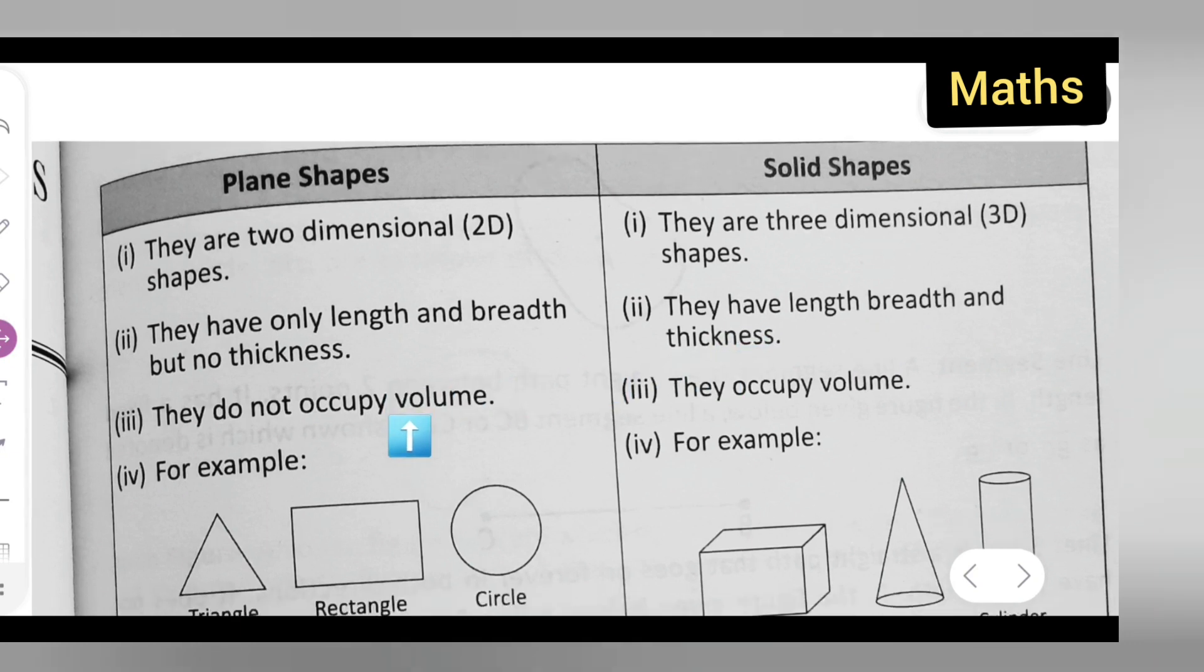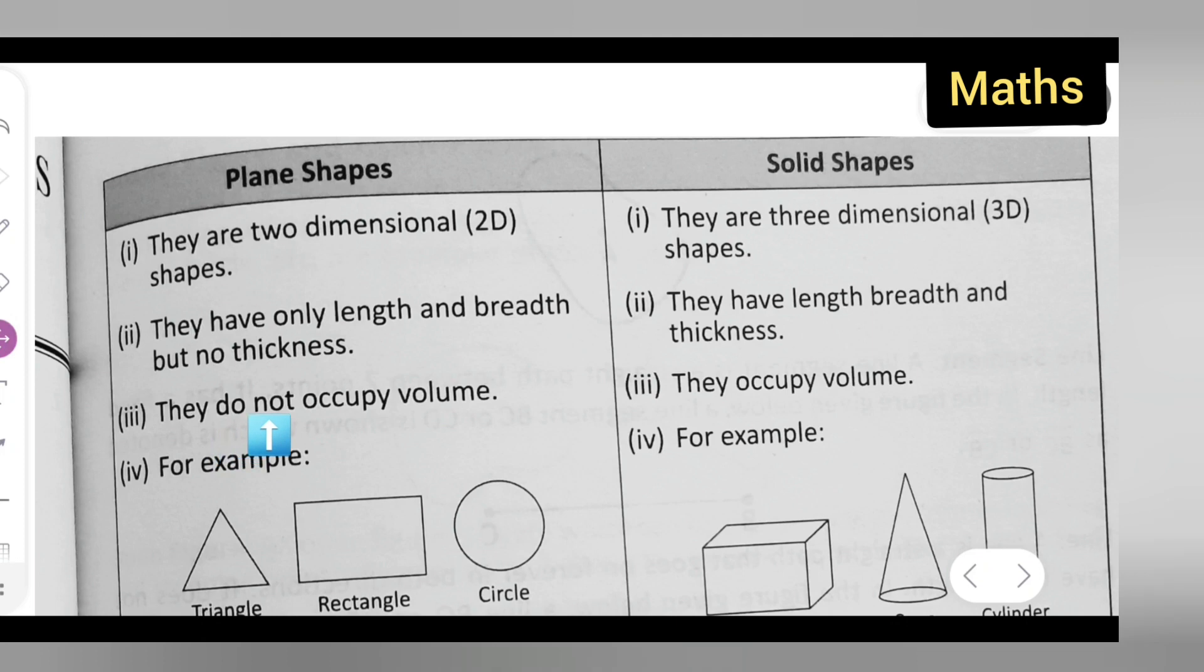Now, third point under plane shape is, they do not occupy volume. Third point under solid shape is, they occupy volume.